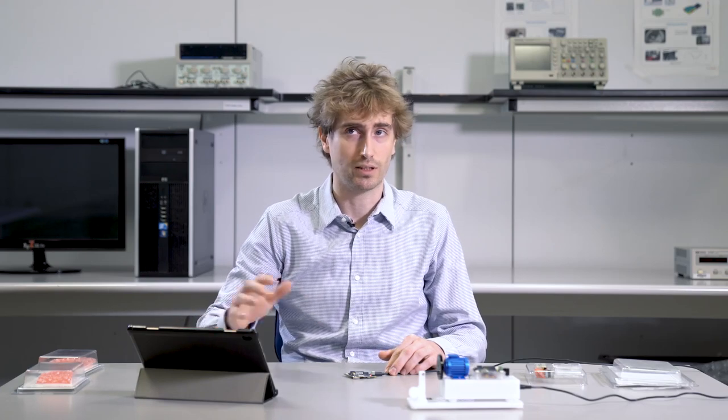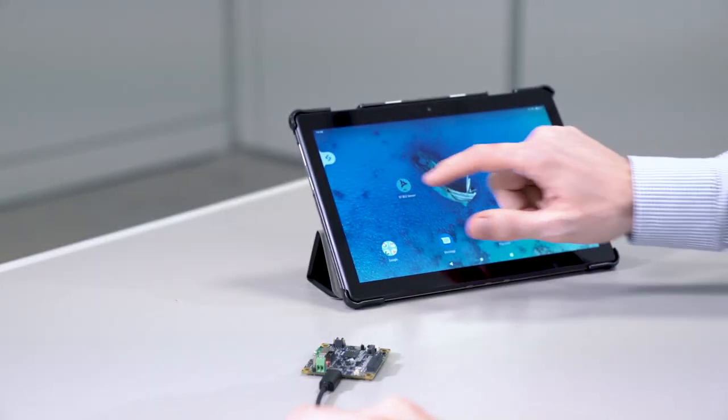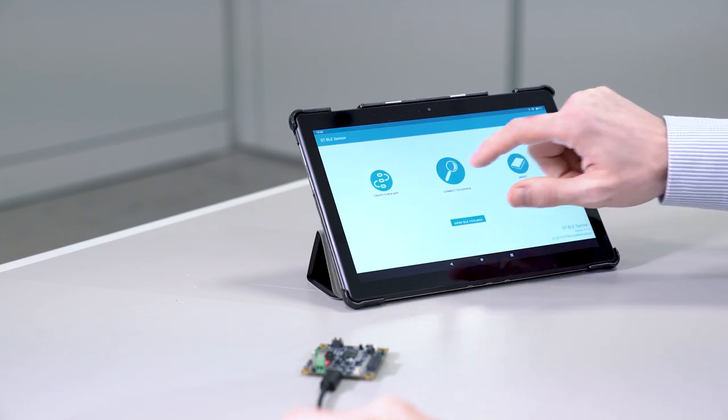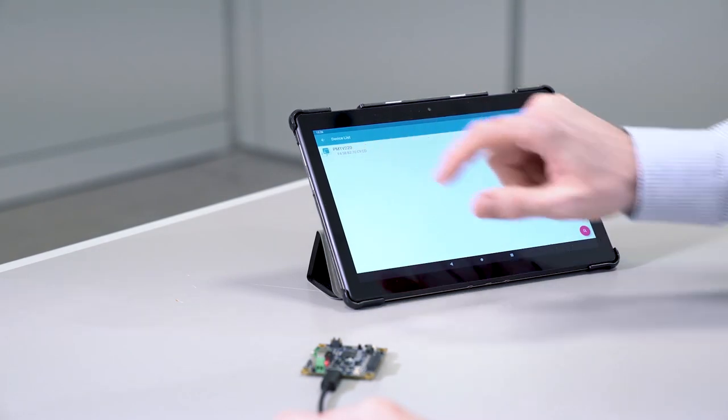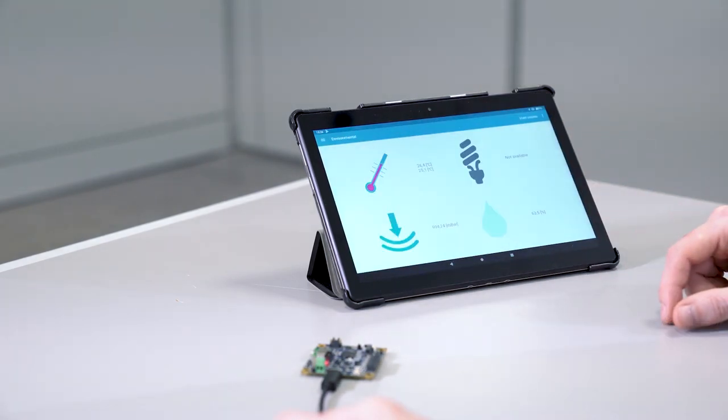So, we just need to download the ST BLE Sensor app that is available for both Android and iOS. Let's open the app, search for nearby devices and click on the name to connect. After a few seconds, we are already able to see the data coming through.